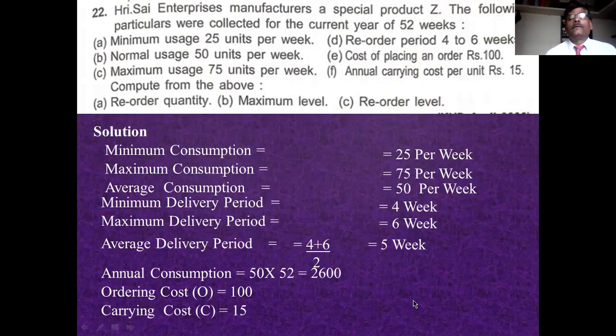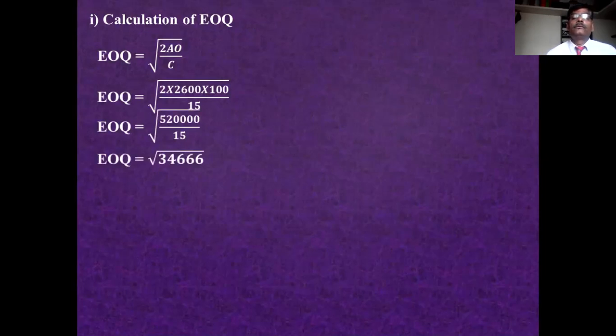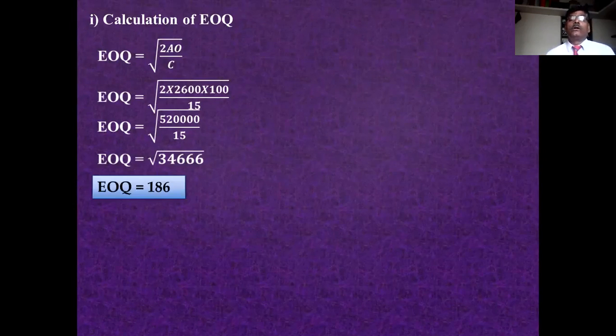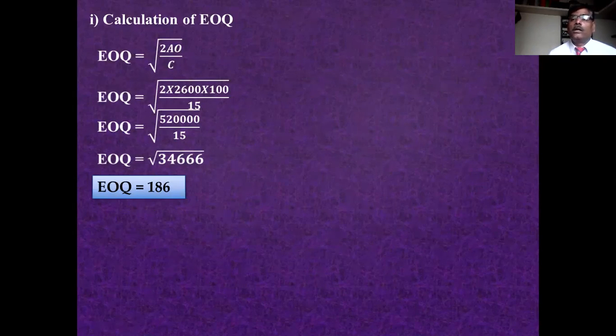First, calculate reorder quantity (EOQ). Economic order quantity = √(2U/C) = √(2 × 2,600 × 100 / 15). Economic order quantity is approximately 186 units. Whenever you place the order, you have to order 186 units. This completes the first question.